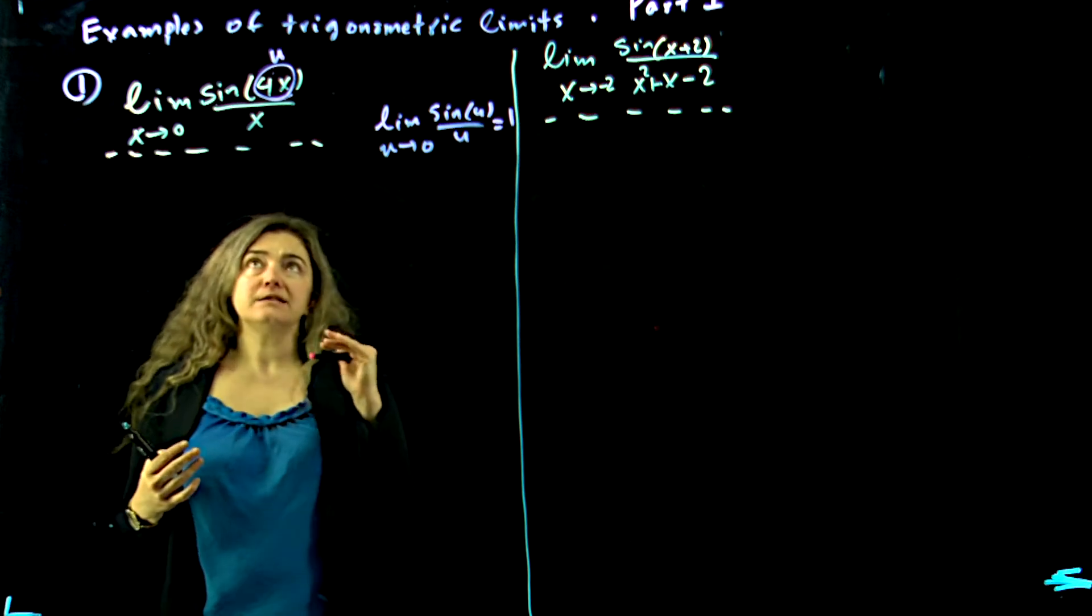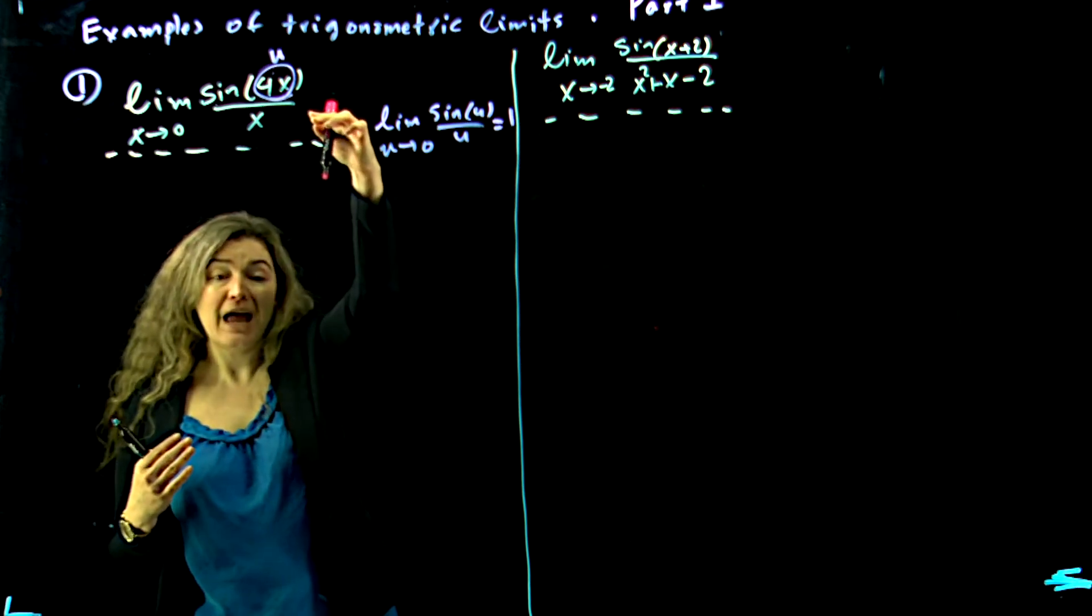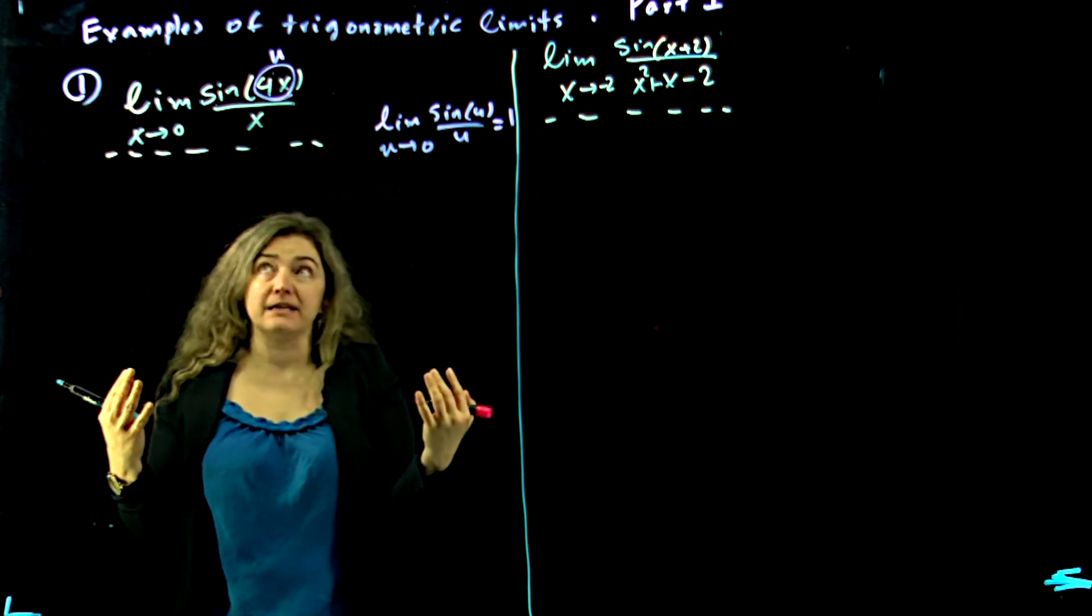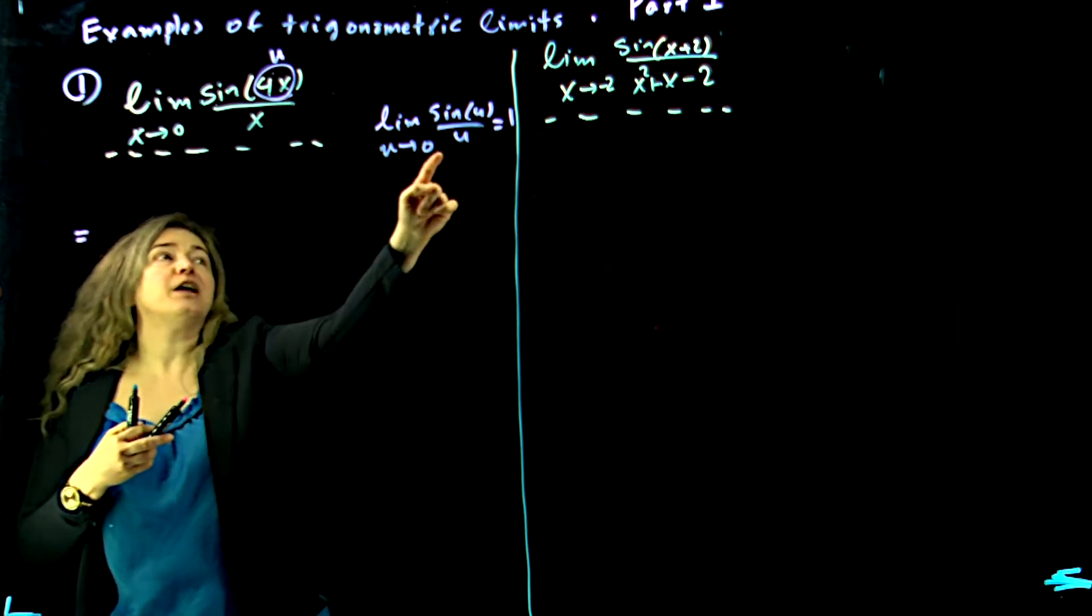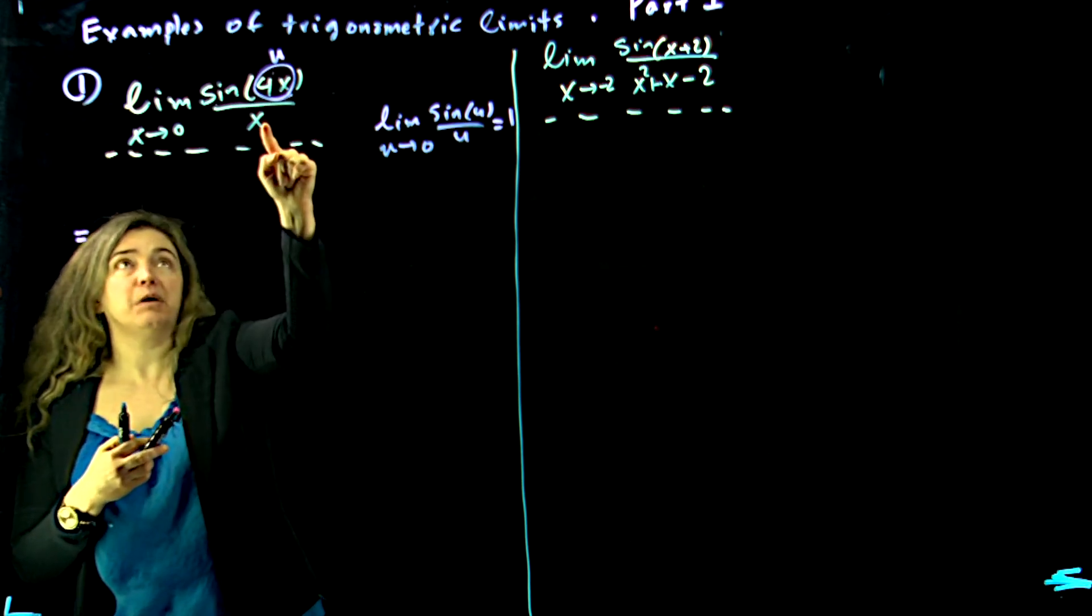Okay, here's the thing: you're gonna change what limit you have and put it in disguise. What are the disguises? Here I want to have that format, so I have to have u in the bottom.